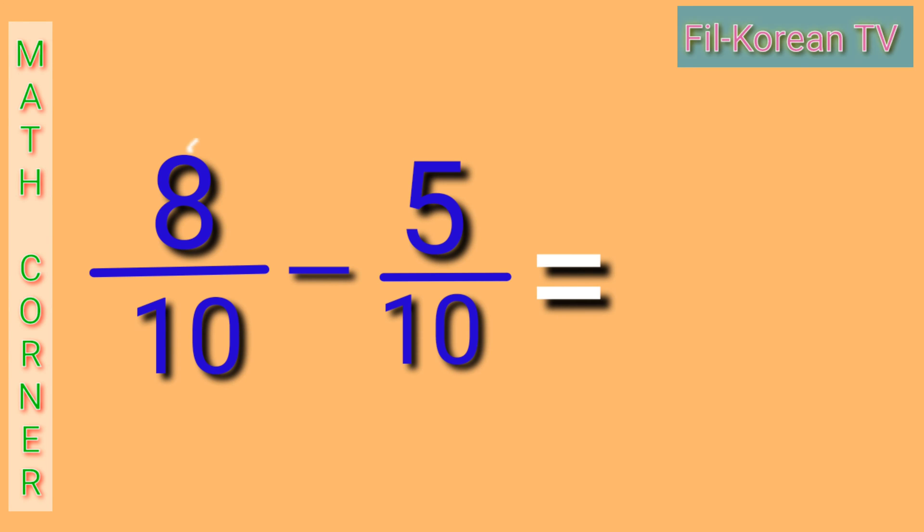Okay, let us answer. 8 minus 5 equals 3. Then copy the denominator 10. The answer is 3 tenths.